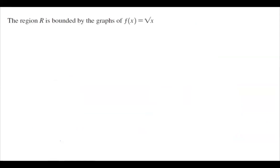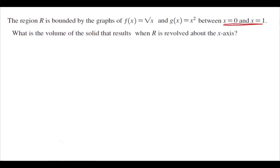For example, the region R is bounded by the graphs of f(x) = √x and g(x) = x² between x = 0 and x = 1. What is the volume of the solid that results when R is revolved about the x-axis? As you can see here, now you have two functions to work with. It's not just one function. You don't have one radius—you have two radii.